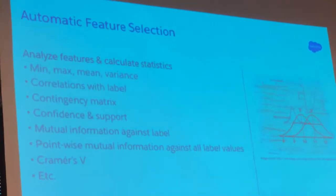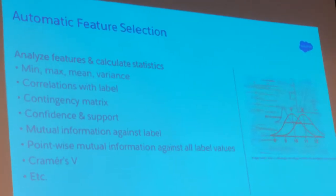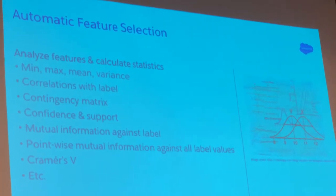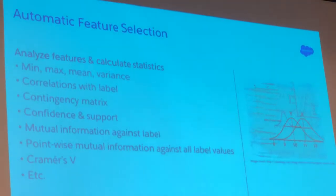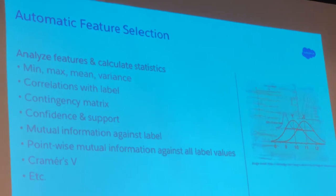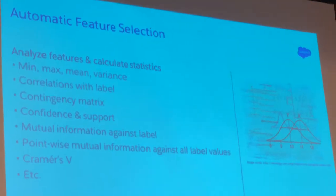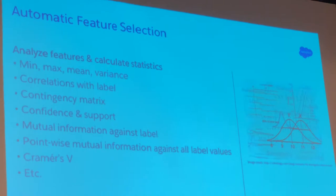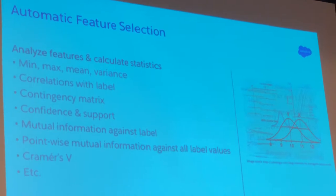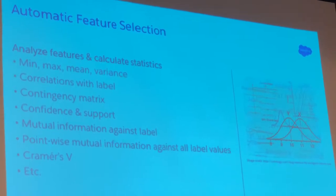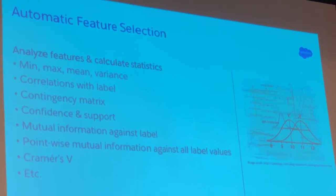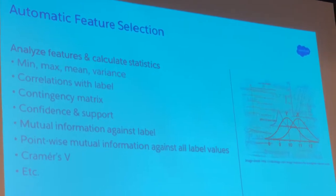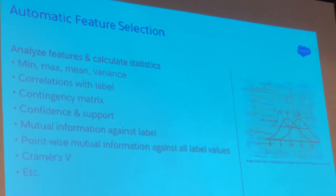Going to the next section — automatic feature selection. This is where hardcore stats folks will smile. We read the papers and we put in statistics such as p-values and mutual information computations that we compute against the label.